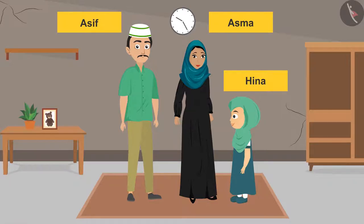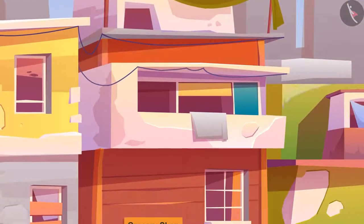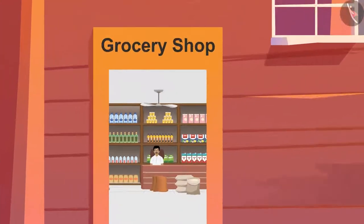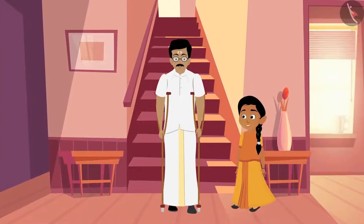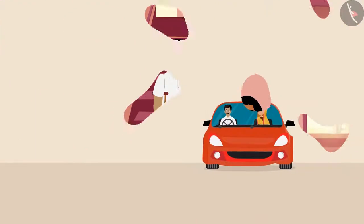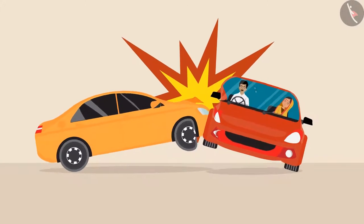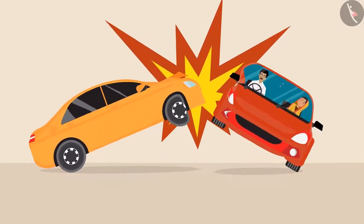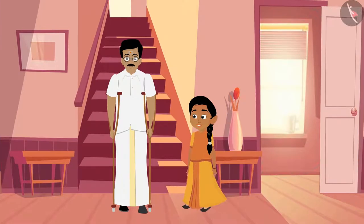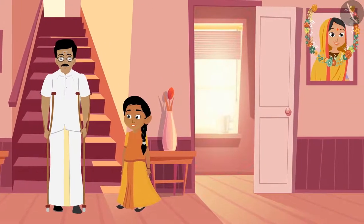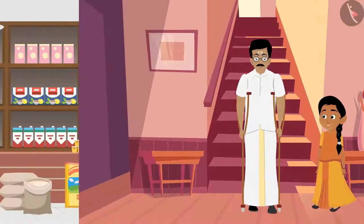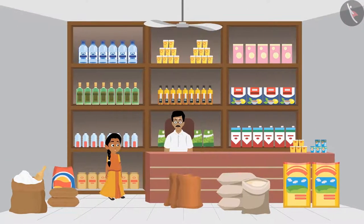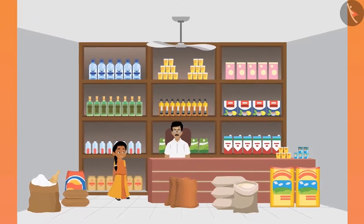Just below Asif's house is a grocery shop run by Balaji. He lives right behind the shop with his daughter Ramya. Some time ago, in an accident, he had lost his wife. In that same accident, Balaji had injured his right leg, because of which he has developed a permanent limb disability. Ramya takes good care of her father and also helps him in the shop.